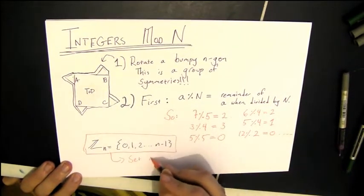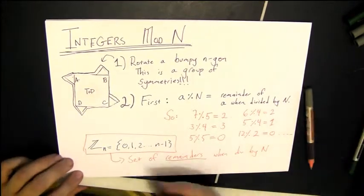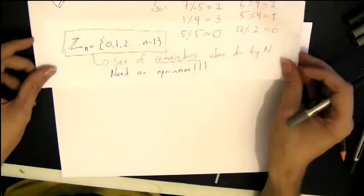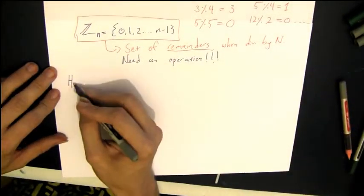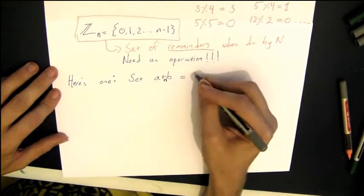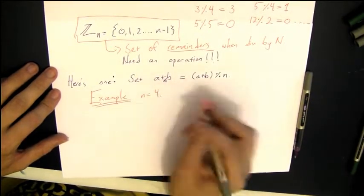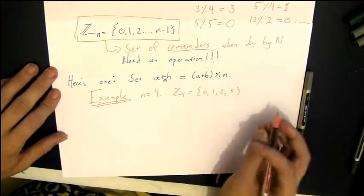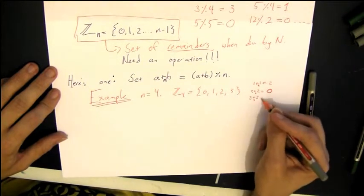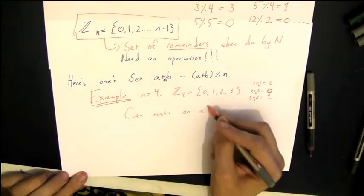As a set, Zn, as we're going to write it, will be the numbers 0 through n minus 1, which is the set of remainders that you can possibly get when you divide by n. But now we need an operation, and that operation is going to be like this. We're going to take any two numbers from Zn, so those numbers between 0 and n minus 1, and to add them, we're just going to add them together and then take the modulus by n. So for example, if we take 1 plus 1, we get 2. If we take 2 plus 2 mod 4, we get 0, and 3 plus 2 mod 4 is 1.